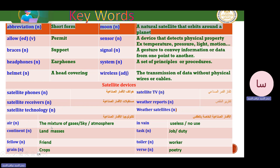Air means a mixture of gases, or it means the sky or atmosphere. Continent means land masses like Africa, Asia, and Europe. Fellow means a friend. Grain means crops like wheat and corn. In vain means useless or has no use. Task means a job or a duty. Tailor means a hard worker. Verse means poetry.